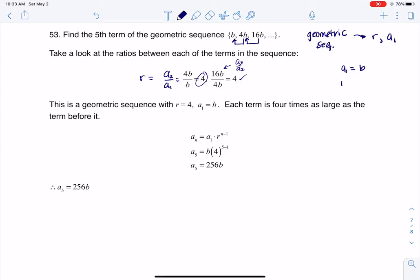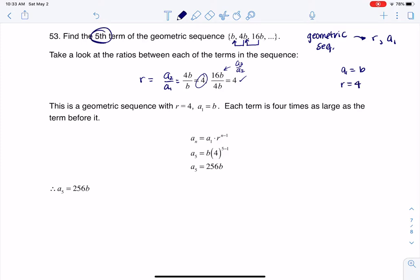Now that I have r equaling 4, I'm asked to find the fifth term of the sequence, and we have this sequence formula for a geometric sequence. For the n value, I'm going to plug in 5. And we know the a₁ value, we just found that - that was b. It's fine that we have a letter; the formula still applies.